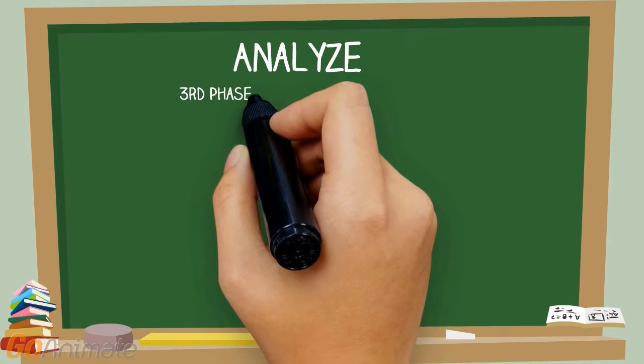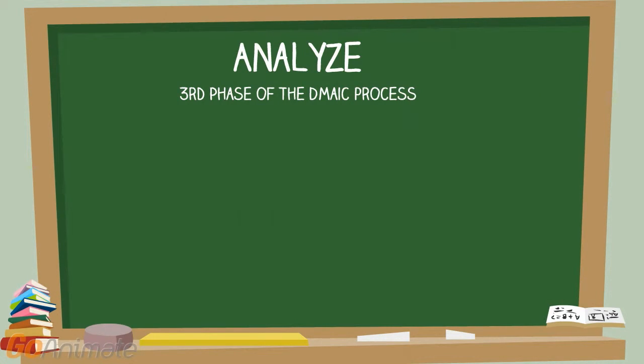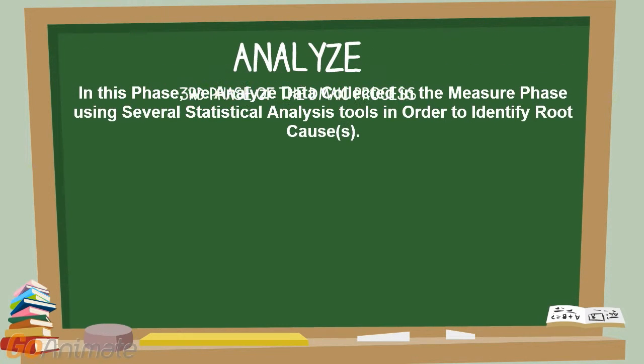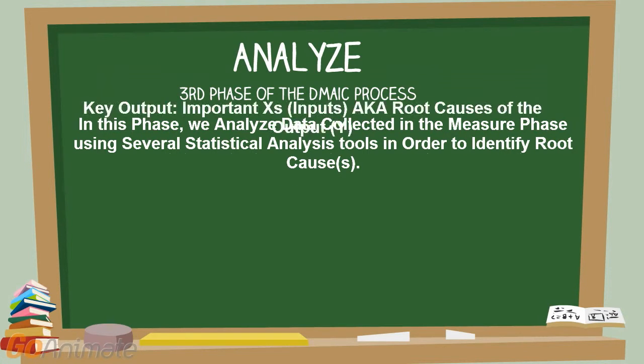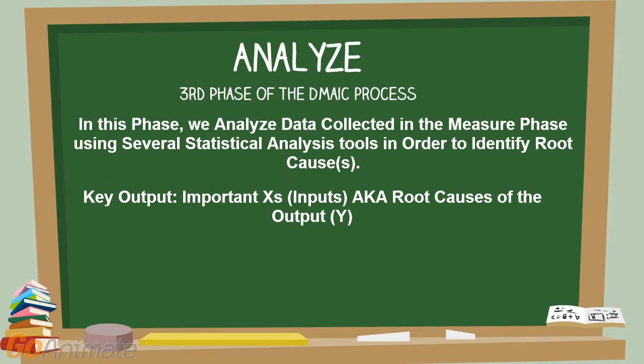Analyze is the third phase of the DMAIC process. In this phase, we analyze the data collected in the measure phase using several statistical analysis tools in order to identify root causes. Key output: important Xs, inputs, also known as root causes of the output Y. Typically, the Analyze Phase is two to three weeks in total duration.